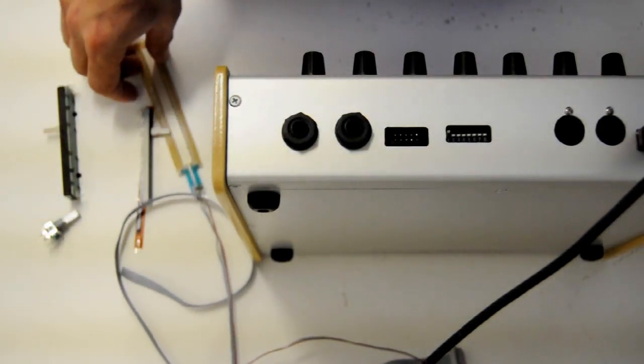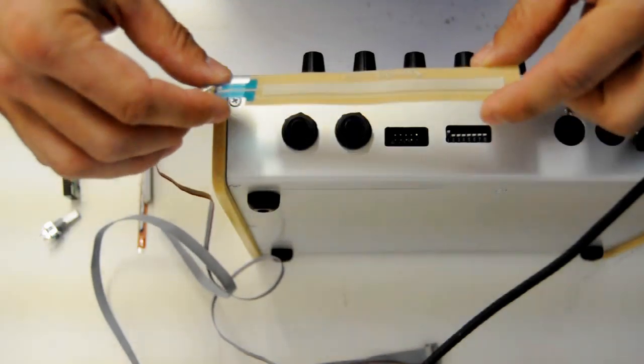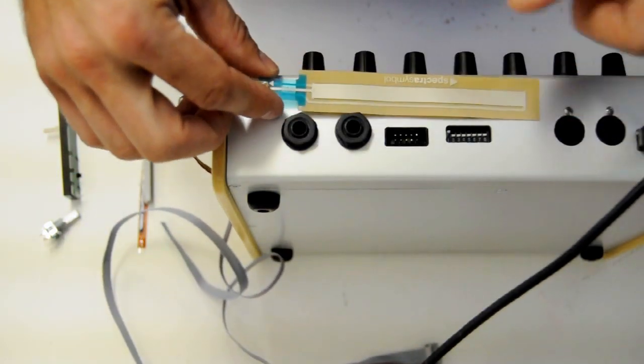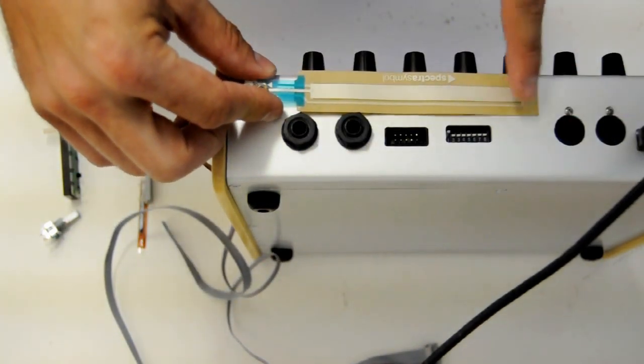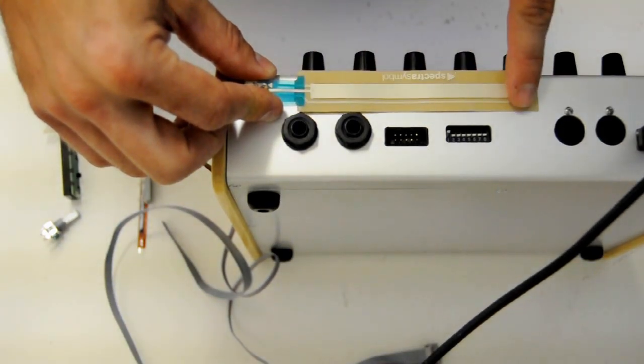For this video, I am going to be wiring a soft pot, which is basically a fader, but instead of moving something mechanical, you just touch it with your finger and it creates resistance.